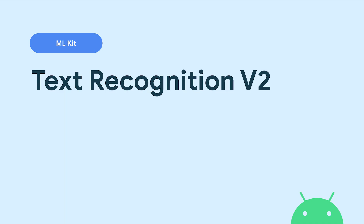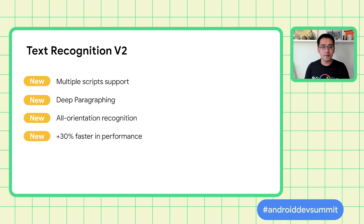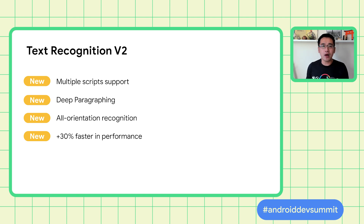I'm thrilled to introduce Text Recognition V2 and some big improvements we've been working on. With new pipeline models baked in, Text Recognition V2 is even more powerful. It has all the features from V1, as well as several new capabilities: support for multiple scripts beyond Latin, deep paragraphing which provides better structural grouping across various layouts, all orientation recognition, and it is more than 30% faster.